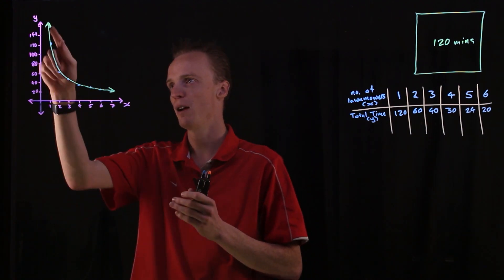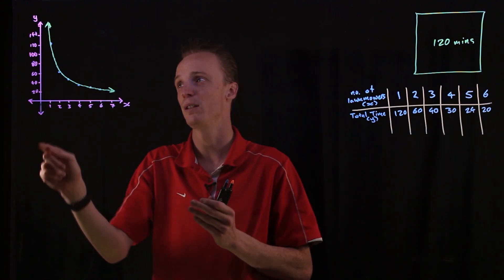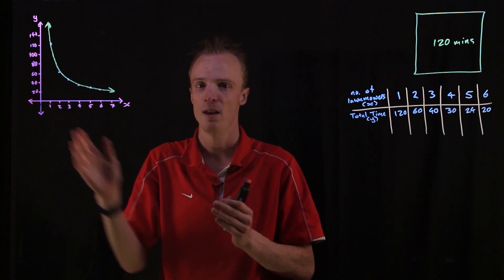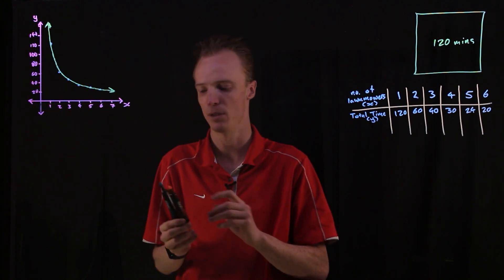So this creates this graph that's going to keep going closer and closer to this y-axis, but never actually touch it. So we call this here a vertical asymptote.